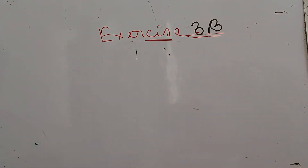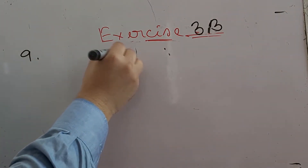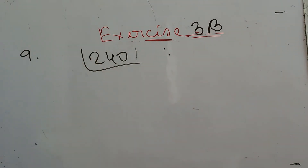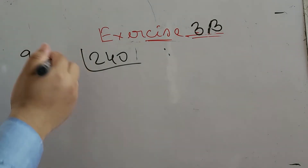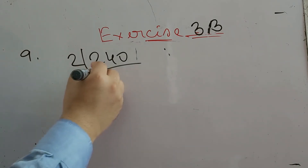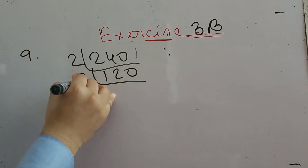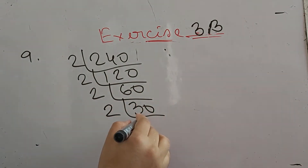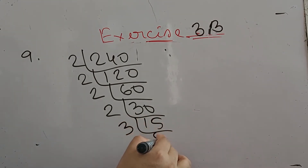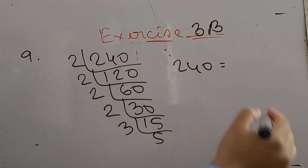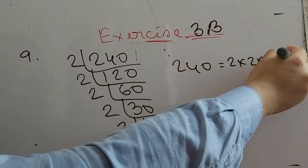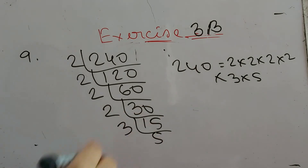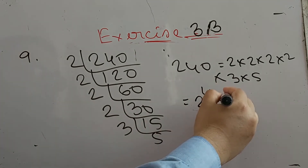Number nine says: express 240 in its prime factors. Since this is an even number, we can divide by two. 240 divided by two is 120; 120 divided by two is 60; 60 divided by two is 30; 30 divided by two is 15; 15 divided by three is 5. So 240 means two into two into two into two into three into five, that is two to the power four into three into five.